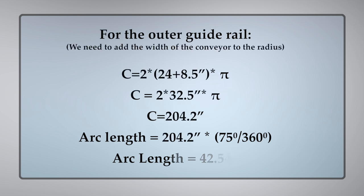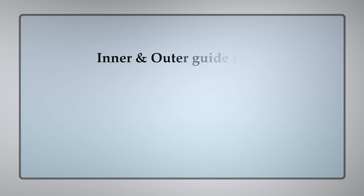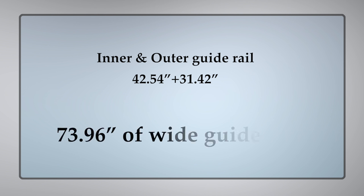For the outer guide rail, we need to add the width of the conveyor to the radius. After calculating the arc length for the outer guide rail, we get 42.54 inches. Together, the inner and outer guide rail equal 42.54 inches plus 31.42 inches, which equals 73.96 inches.